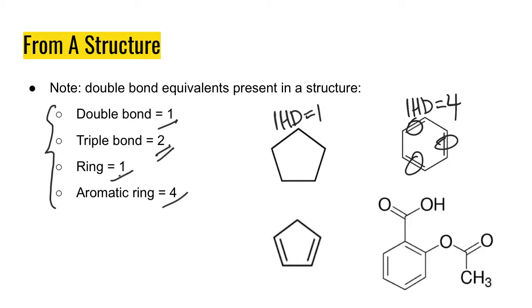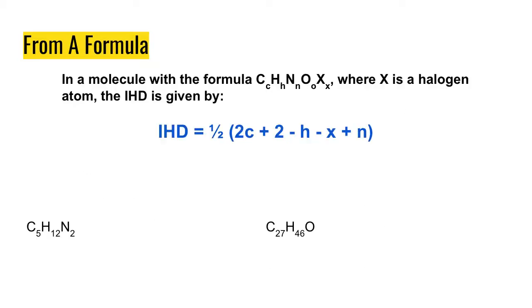For the next one down here, we have one ring and we have two double bonds, so its total IHD value is equal to 6. It's really easy to determine the IHD value from a structure. It's a little bit more complicated as you go through from a chemical formula, because you do need to use an equation to figure it out.